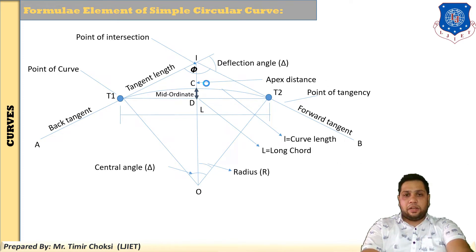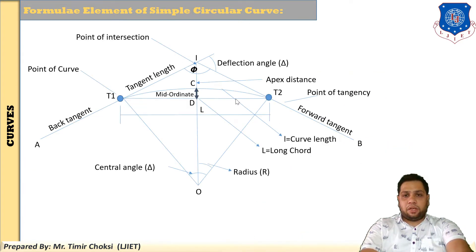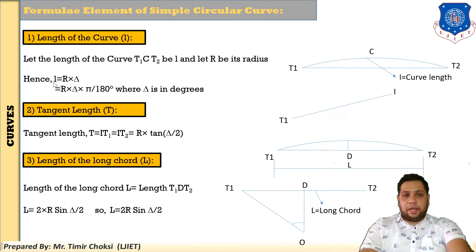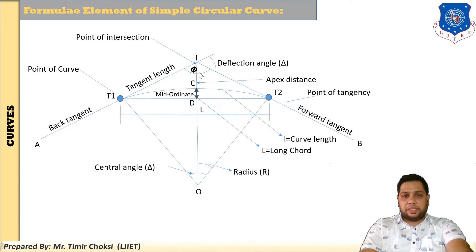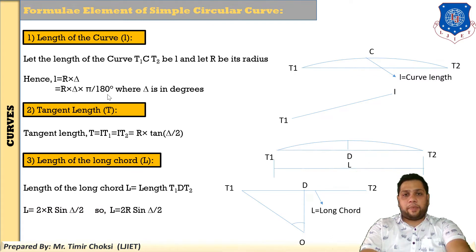Here are the formulas. First, length of the curve means L. Length of the curve is the arc distance between T1 and T2. The formula is: small l equals R into delta into π divided by 180 degrees, where delta is in degrees. So the first formula to remember is L = R × delta × π/180. Next is tangent length. Tangent length means I-T1, same as I-T2. Taking triangle T1-I-O, you can find the distance I-T1 equals R times tan(delta/2).